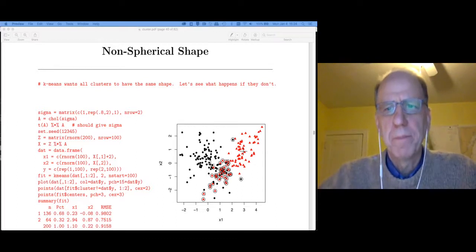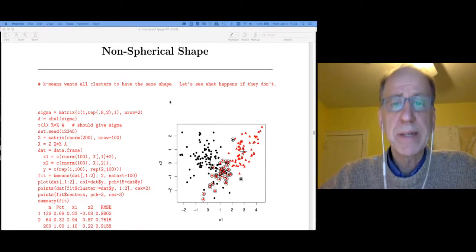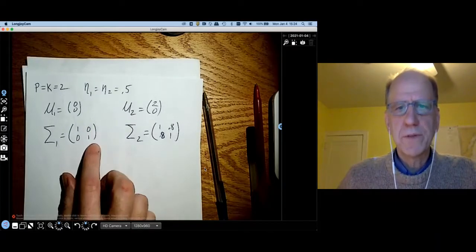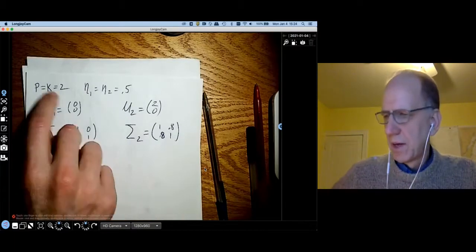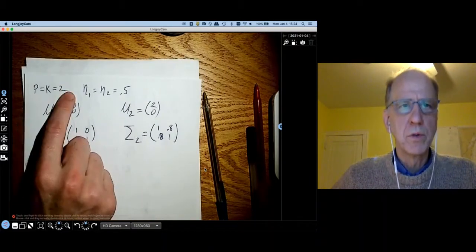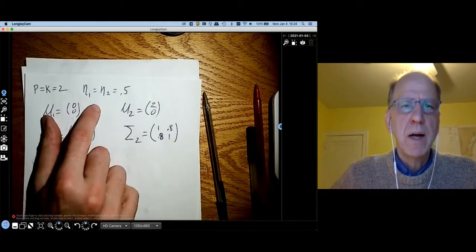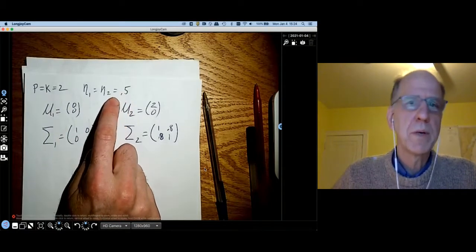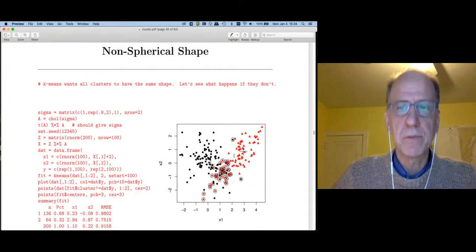I'd like to begin with an example. This is an example that we discussed back when we were breaking k-means. If we go off to the right, I scribbled out the parameters. We have p equal to two variables and k equal to two classes. I set this up so that the two prior probabilities were both equal to 0.5.